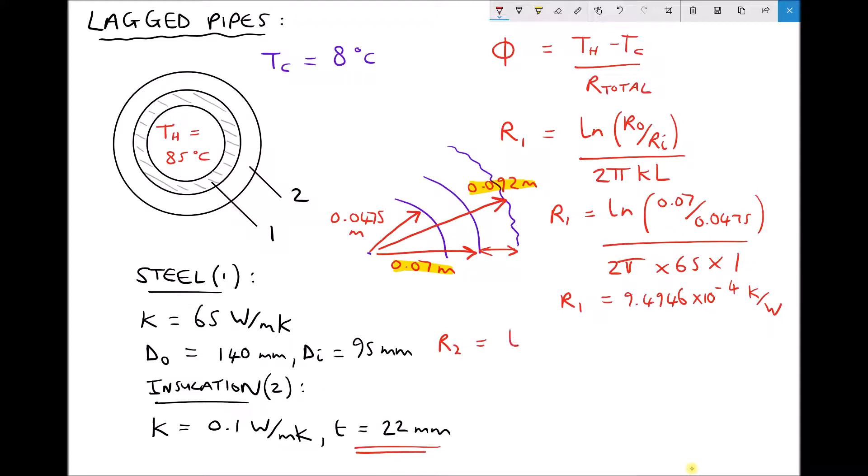So for the insulation, we have natural log outside radius 0.092 over the inside radius of the insulation, 0.07. Divided by 2π times the thermal conductivity of 0.1 and the length of 1. Giving us a thermal resistance equal to 0.43496 Kelvin per watt.